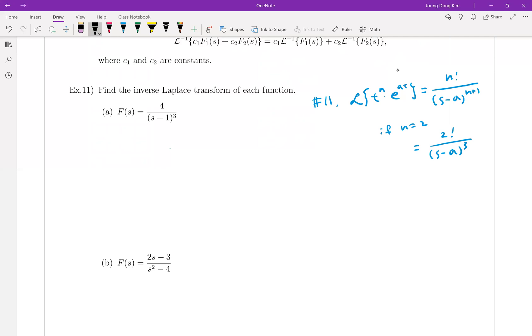Then we can write like this way. Inverse Laplace transform of the given function F of s is equal to, well, this one can be written by 2 factorial over s minus 1 cubed and then we need 2 as well to make it 4. It is equal to inverse Laplace transform because this is linearity, 2 factorial over s minus 1 cubed. And that is equal to 2 times t squared times e to the 1t. That's it.